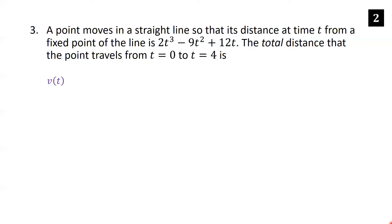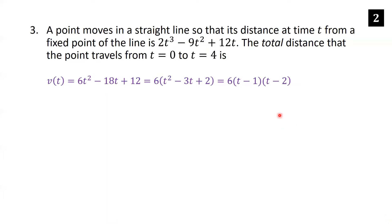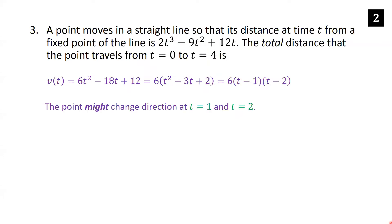The velocity is the derivative of the position expression. Using power rules: 6t squared minus 18t plus 12. Factoring out a 6 gives t squared minus 3t plus 2, which factors as (t minus 1)(t minus 2). Checking: negative 2t minus t is minus 3t, and negative 1 times negative 2 is positive 2. So the point might change direction at t equals 1 and t equals 2. We split the interval into pieces: 0 to 1, 1 to 2, and 2 to 4.